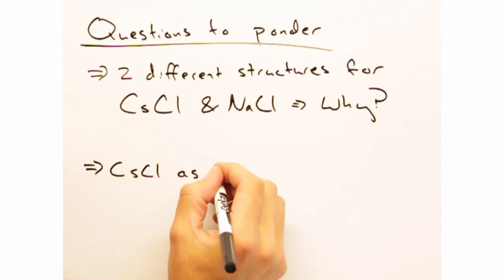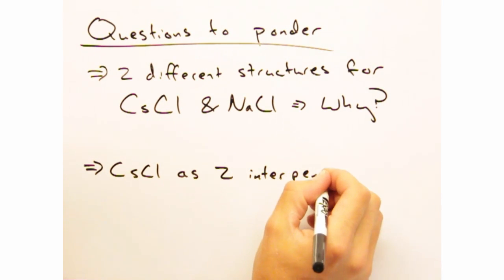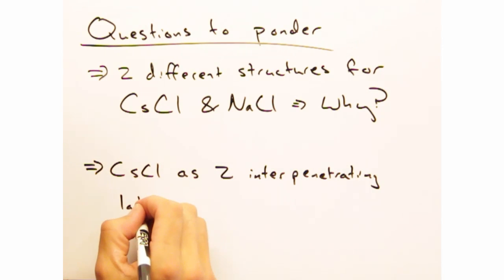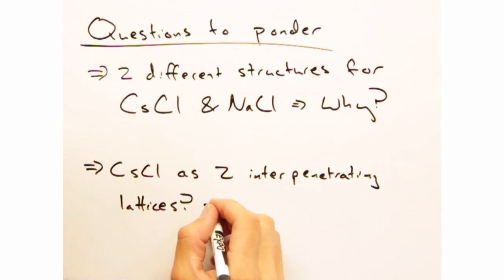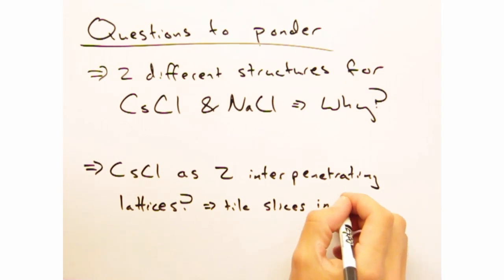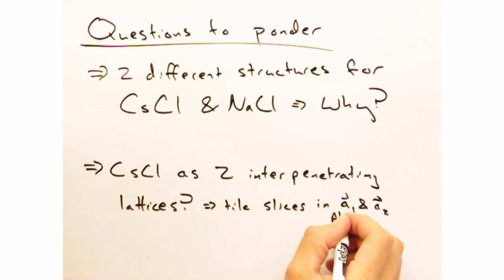And finally, to get you a bit more practice with slices, take a look at cesium chloride. Can you describe this material as two interpenetrating lattices? If so, which ones? I'd suggest tiling your slices in the A1, A2 plane.